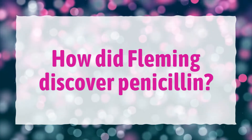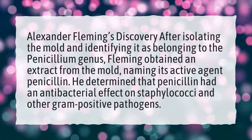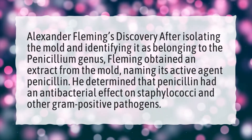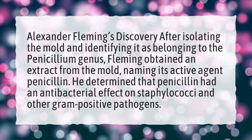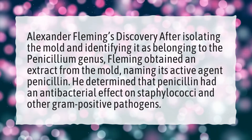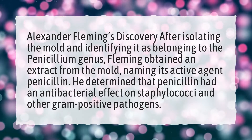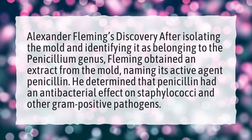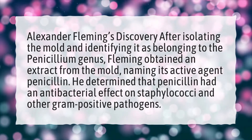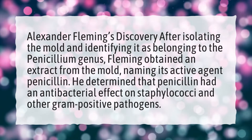How did Fleming discover penicillin? After isolating the mold and identifying it as belonging to the Penicillium genus, Alexander Fleming obtained an extract from the mold, naming its active agent penicillin. He determined that penicillin had an antibacterial effect on Staphylococci and other gram-positive pathogens.